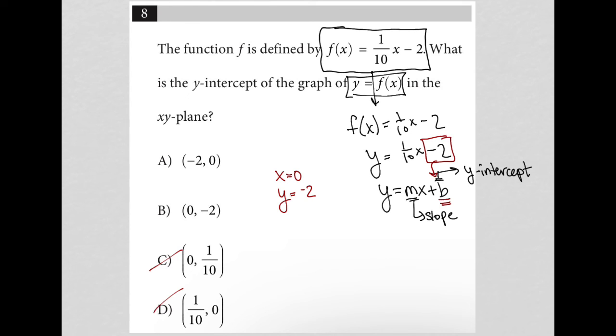The ordered pair version of this, which is always (x, y), would be (0, -2). So our answer here is choice B.